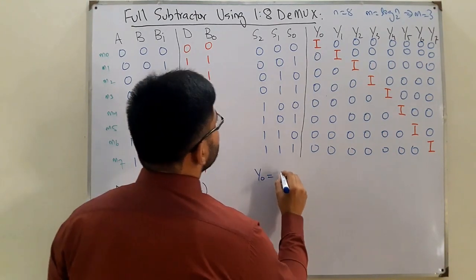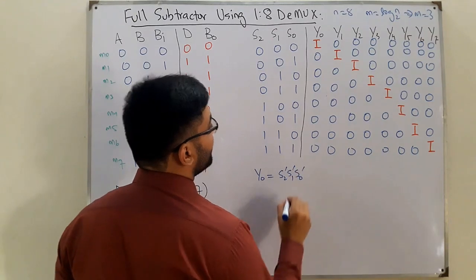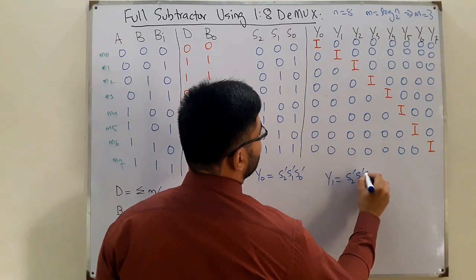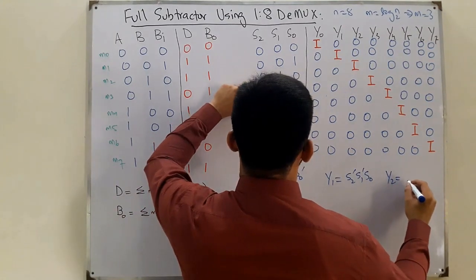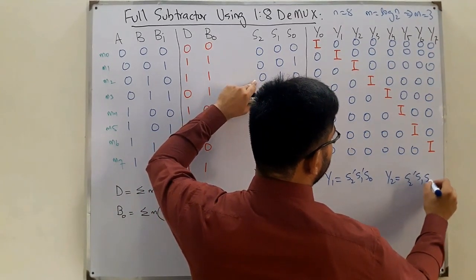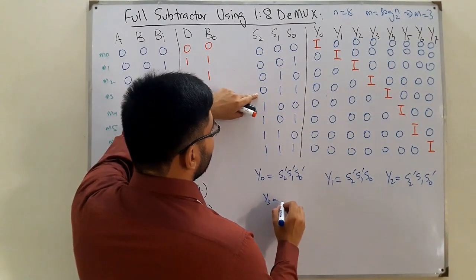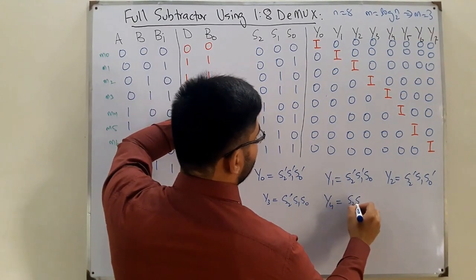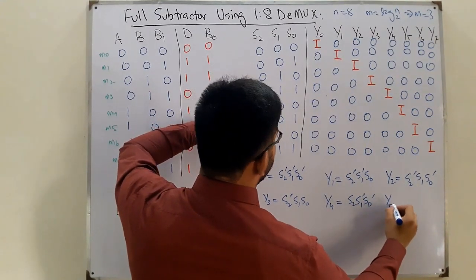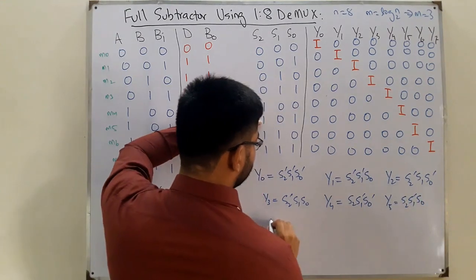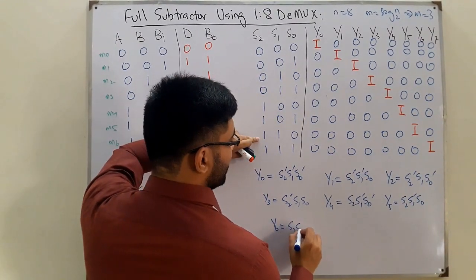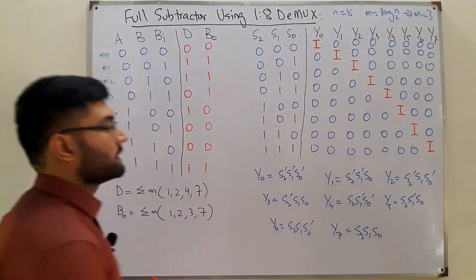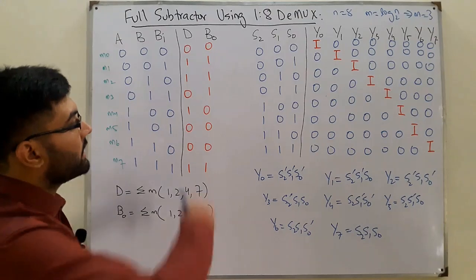The equations are: Y0 = S2' S1' S0', Y1 = S2' S1' S0, Y2 = S2' S1 S0', Y3 = S2' S1 S0, Y4 = S2 S1' S0', Y5 = S2 S1' S0, Y6 = S2 S1 S0', and Y7 = S2 S1 S0.